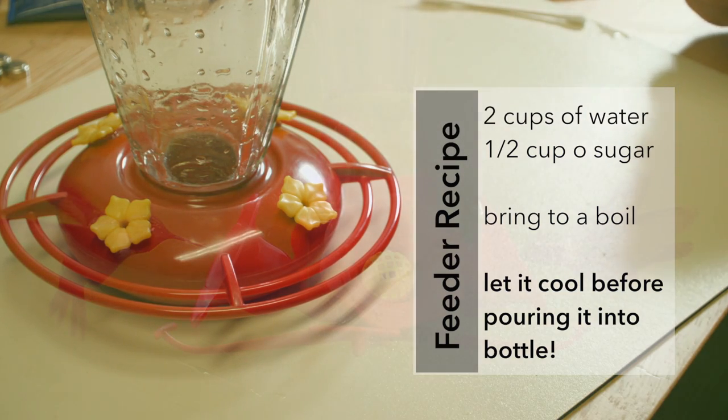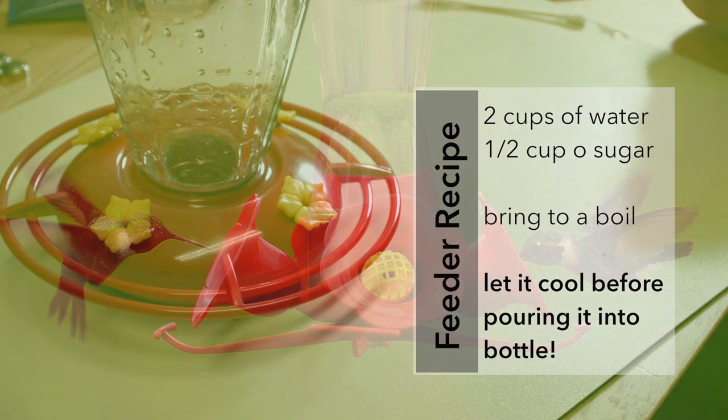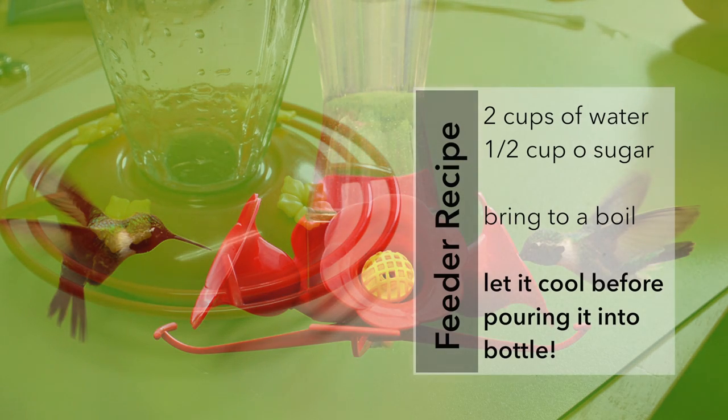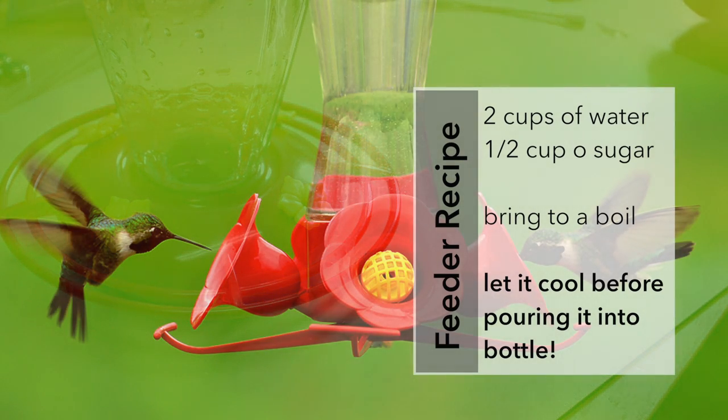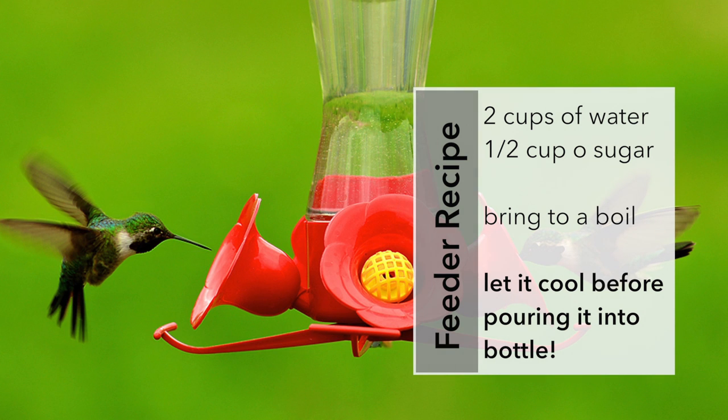Here's a quick recipe for your feeder. If you take two cups of water and half a cup of sugar and bring the stuff to a boil, then you let it cool before pouring it into the bottle. Then you have a great food for your little friends, and it should last maybe two to three days in there.